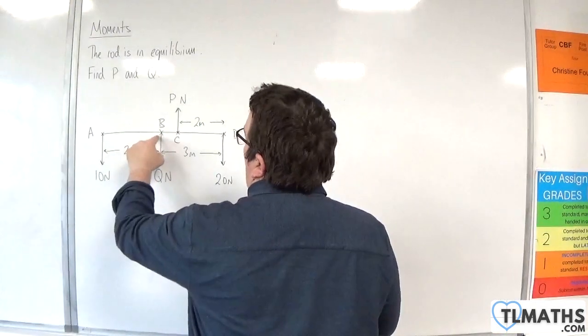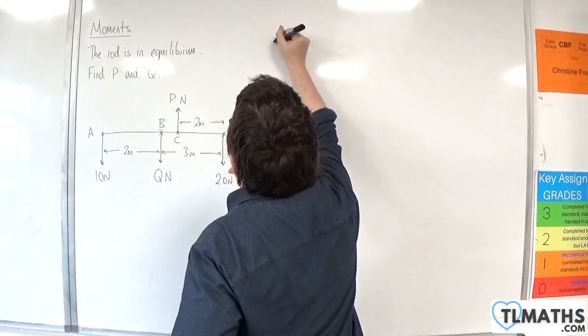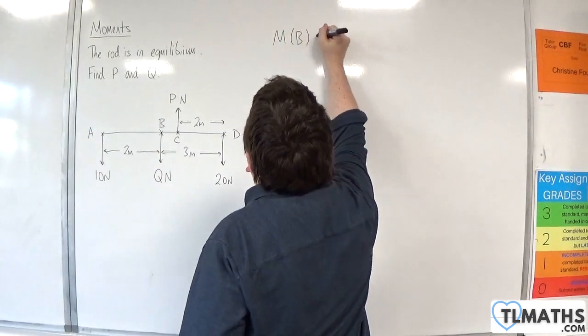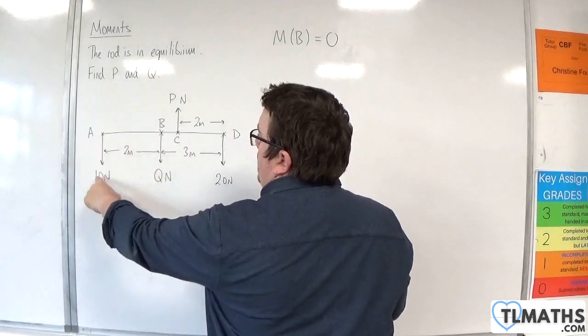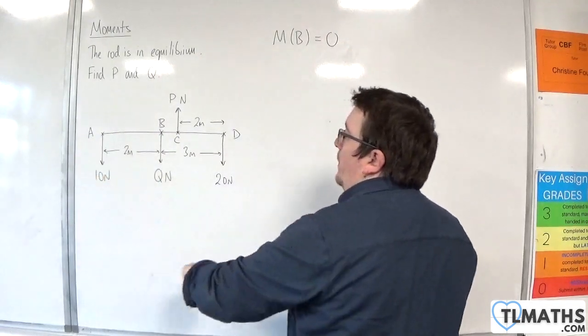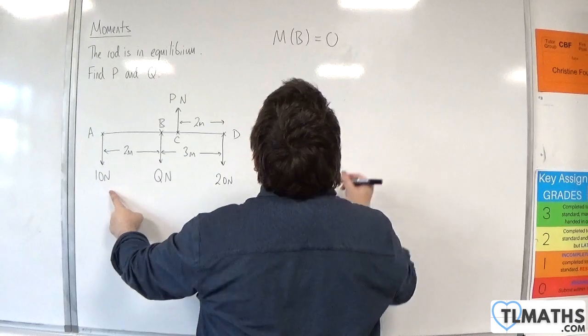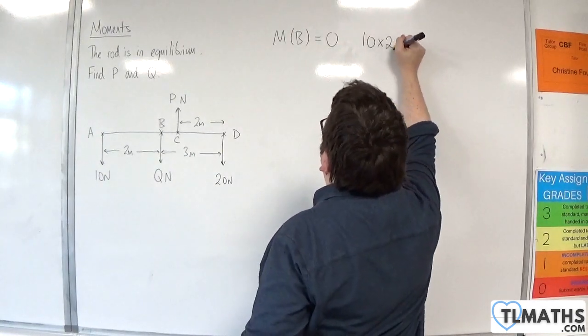Let's take moments about point B. Taking moments about point B, we are 2 metres away from the 10 newton force and that's going to be going in anti-clockwise motion, so that's positive. So we have 10 times 2.